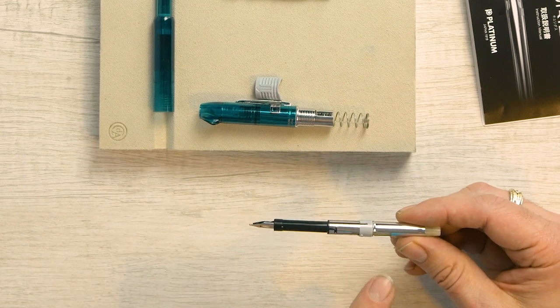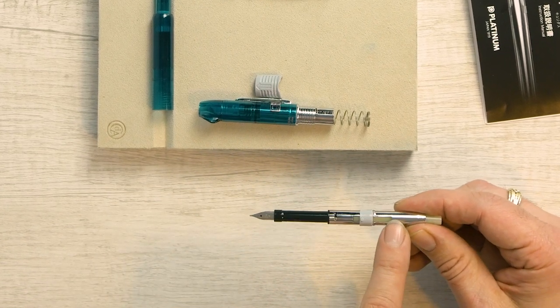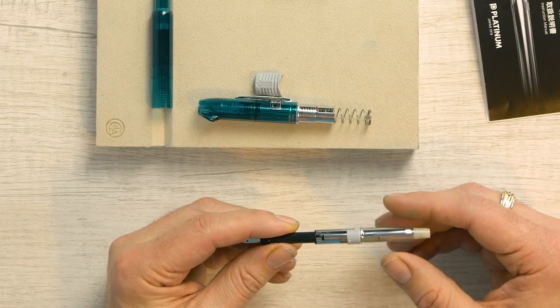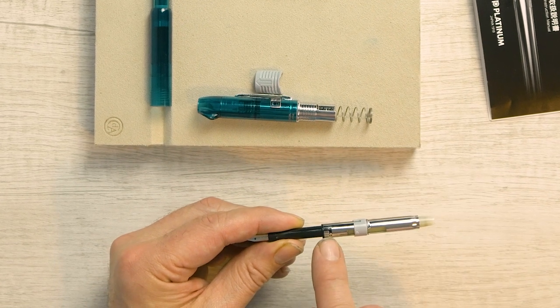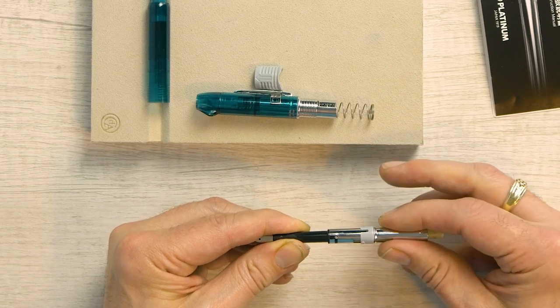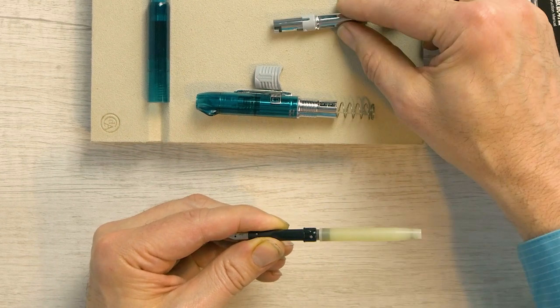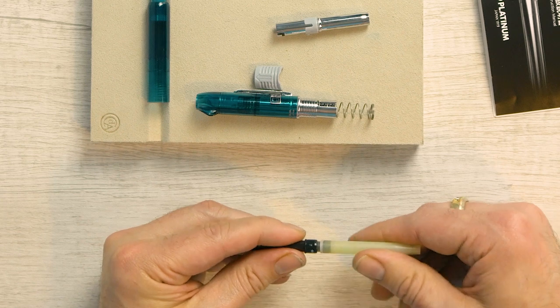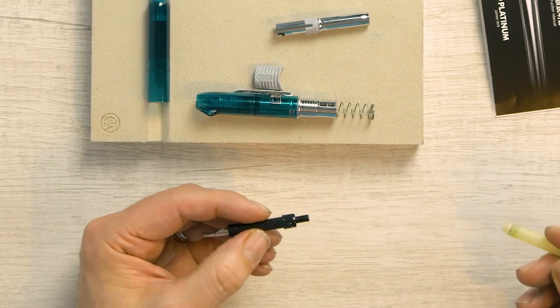now we have to take this cartridge cover off the pen. So we have another little pin here that's going to rotate. And then we pull this off, and so then this gives us access to the rest of the pen.